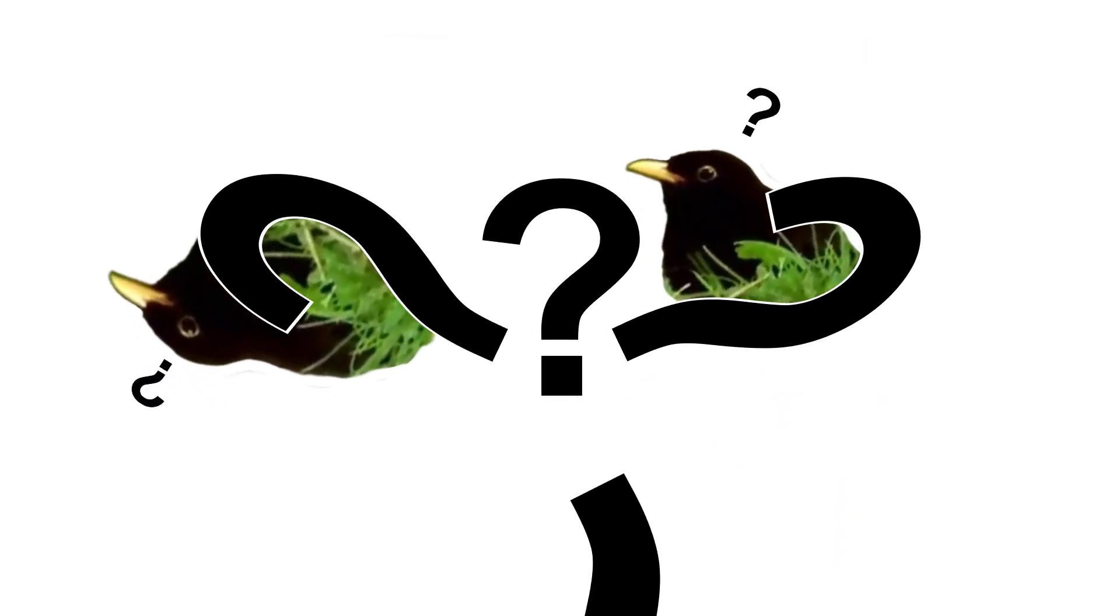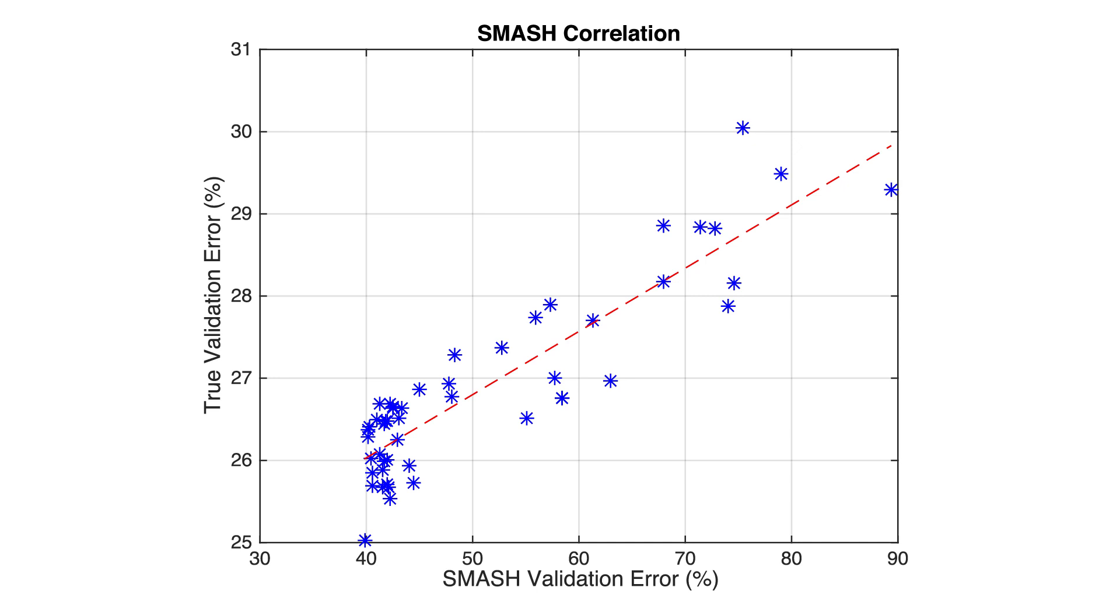So how well does this actually work? To test this, I trained one SMASH network to completion on CIFAR-100, sampled 50 random architectures, and then compared their performance using hypernet generated weights, the SMASH score, to the true validation performance. While there's clearly some noise, we see a decent correlation that suggests we can indeed use generated weights to compare architectures.